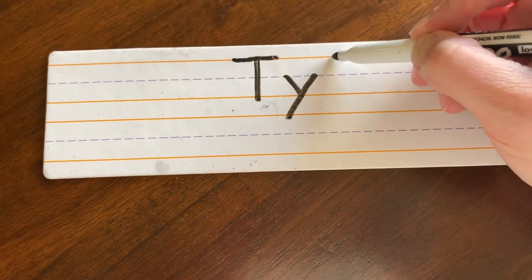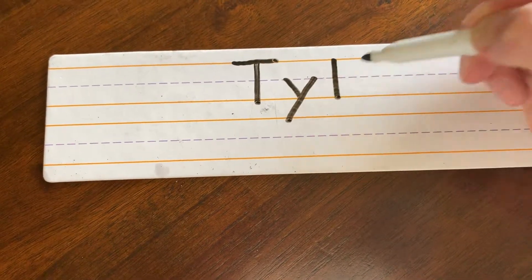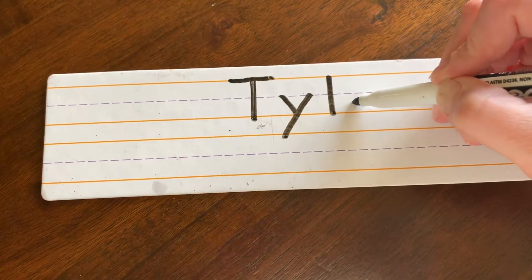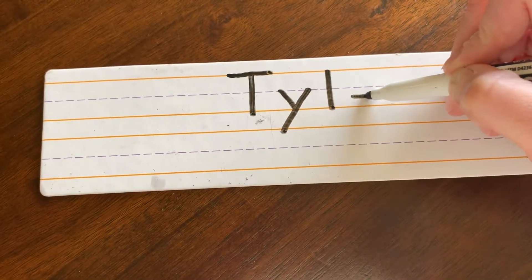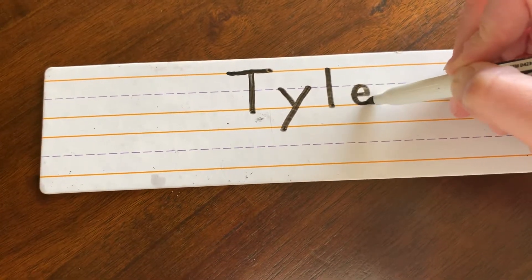L. Start at the top, make the big line drop. E. Start below the dotted line, do a straight line out, curve up to the dotted line and around.